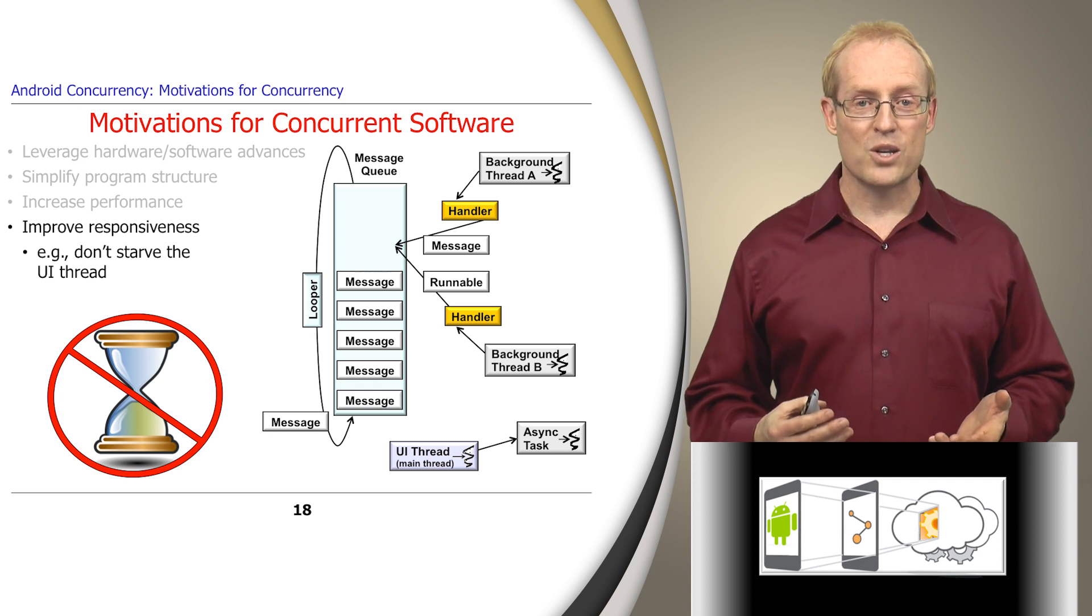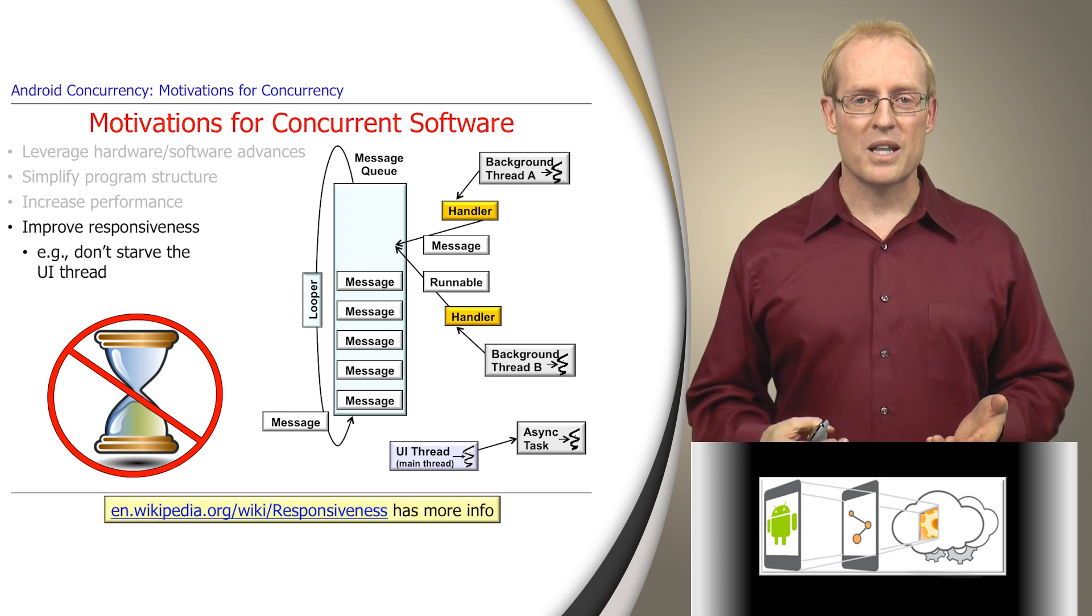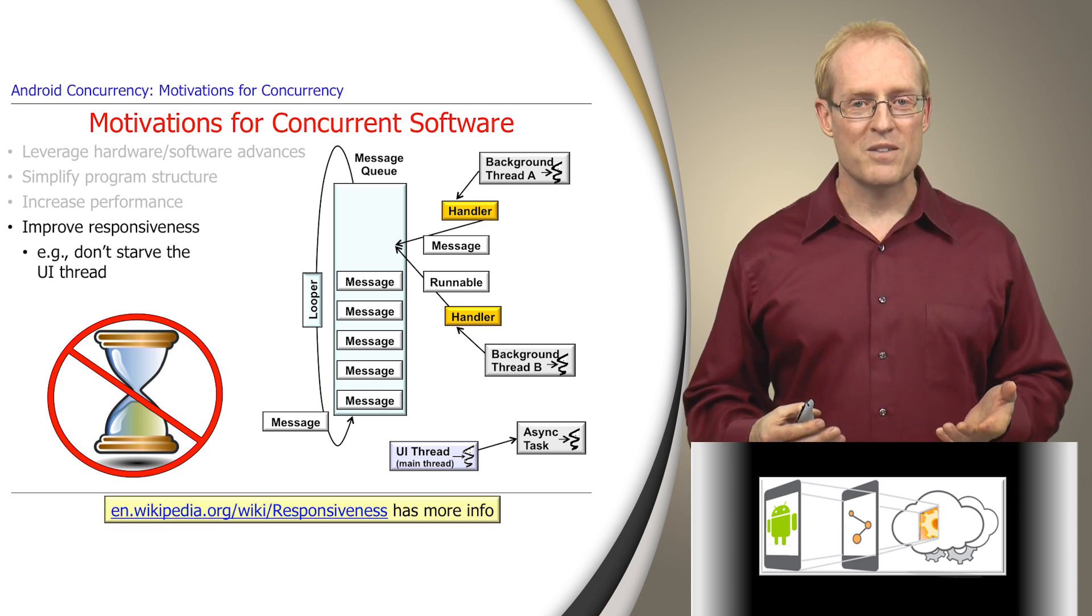while other worker threads execute long-running tasks in the background and perform blocking operations on the file system and network. The link at the bottom of this slide provides more information on responsiveness in computing systems.